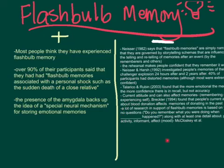Lastly, McCloskey et al. at Johns Hopkins University found that a lot of the research supporting flashbulb memories — most of Brown and Kulik's research — is based on yes or no questions. They asked people: do you remember what you were doing when this happened? If someone said yes and provided just one detail about where they were, what they were doing, who told them, or how they felt, that was enough for Brown and Kulik to classify it as flashbulb memory. So if you think about it, the evidence is not really that strong.